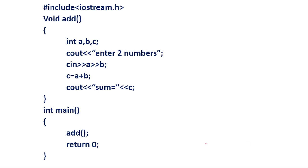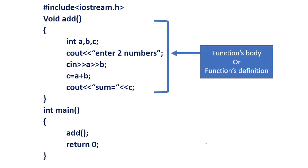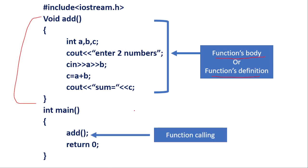This is the program you have seen right now. I am going to explain each and every module. This above module is known as the function body and also as the function definition. The module means the block we are creating. This block is called in main — this is the calling position. We are calling the function body from this position. If you do not call the body of the function, that body will not be executed by main. You have to call that body inside main for it to work.